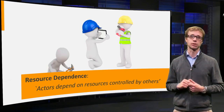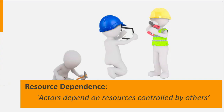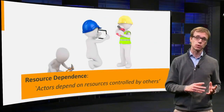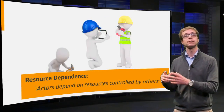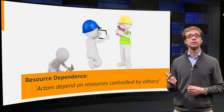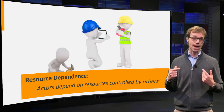The second assumption is that of resource dependence. We assume that actors depend on resources controlled by others. Resource dependence can take various forms and gradations, but the idea is simple: someone wants to hang a painting on the wall, and someone else has the tools required for the job. Based on these two assumptions, we can try to sketch actor behavior.